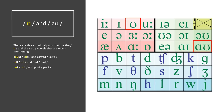There are three minimal pairs that use this vowel and the OO vowels that are worth mentioning: could and cowed, full and foul, put and pout.